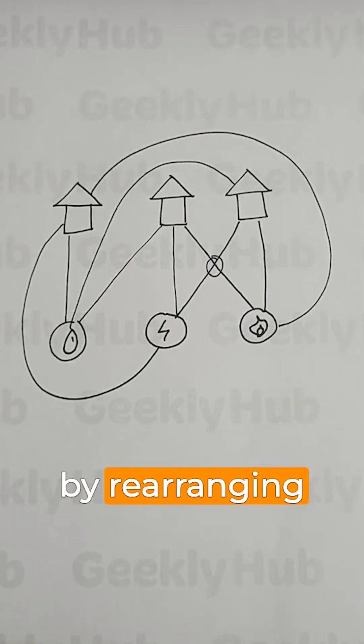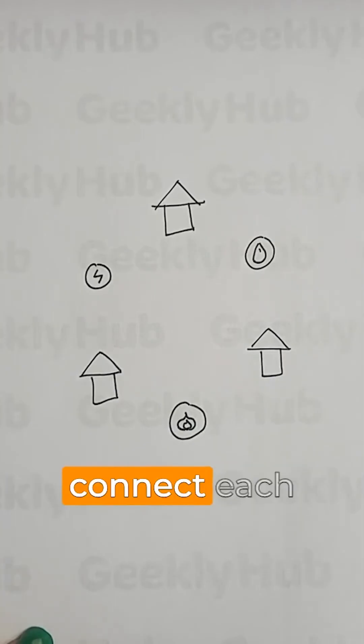First, let's start by rearranging our houses and utilities a little bit. With this setup, we can easily connect each house to the two utilities next to it, making a hexagon.